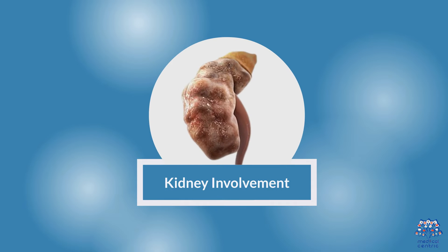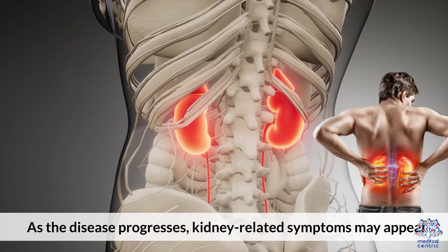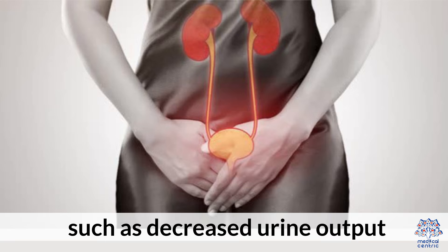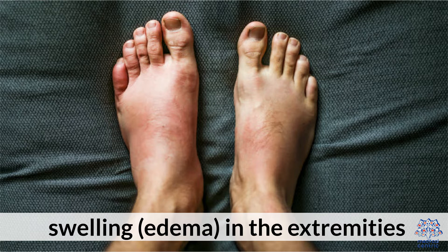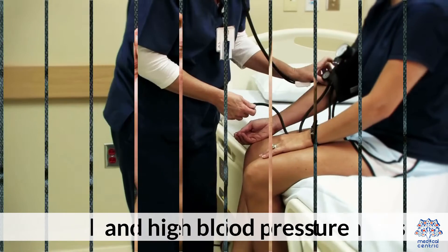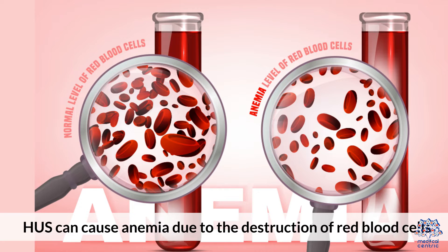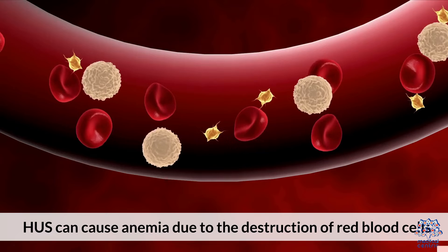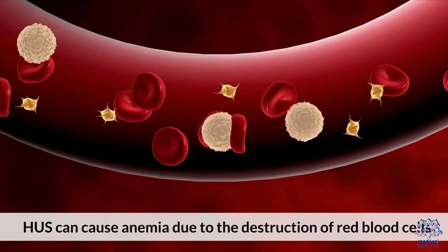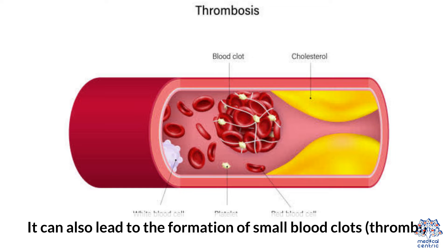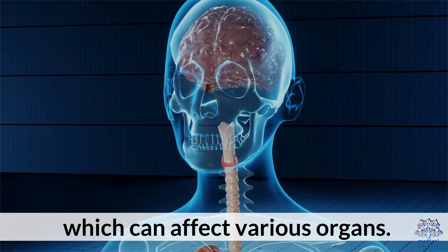2. Kidney Involvement: As the disease progresses, kidney-related symptoms may appear, such as decreased urine output, swelling or edema in the extremities, and high blood pressure. 3. Anemia and Blood Clotting: HUS can cause anemia due to the destruction of red blood cells. It can also lead to the formation of small blood clots, or thrombi, which can affect various organs.